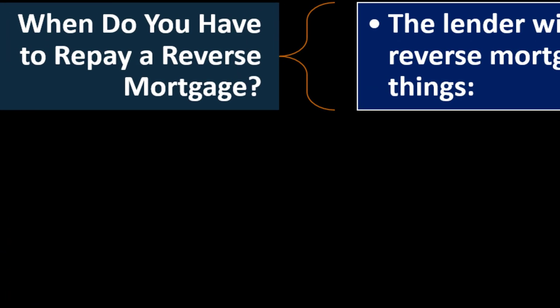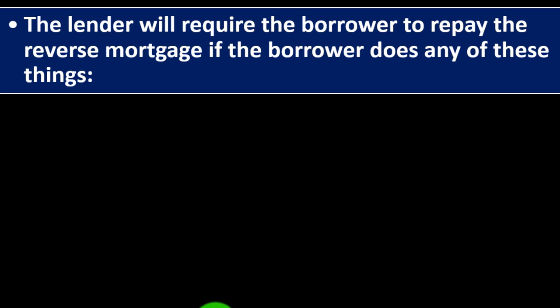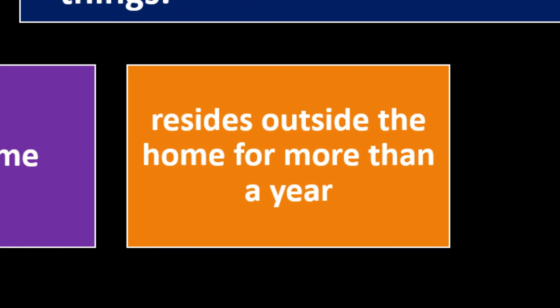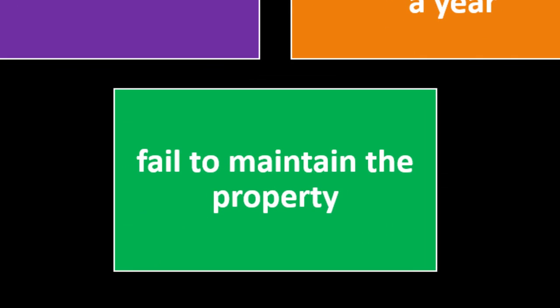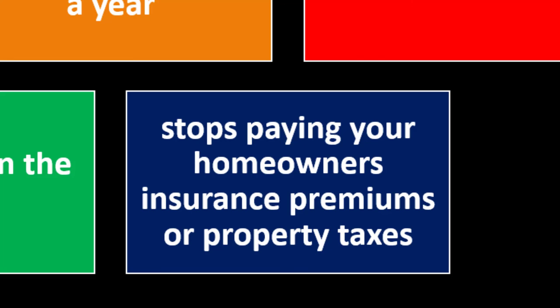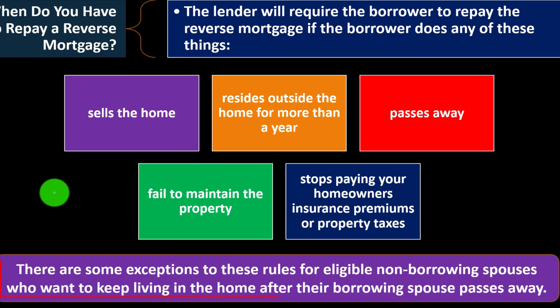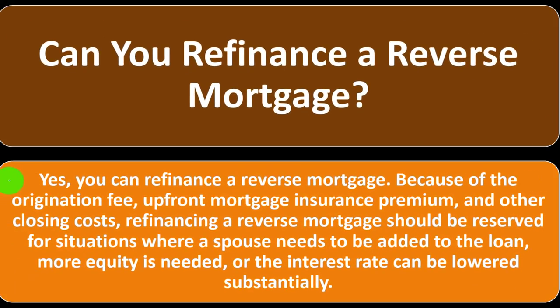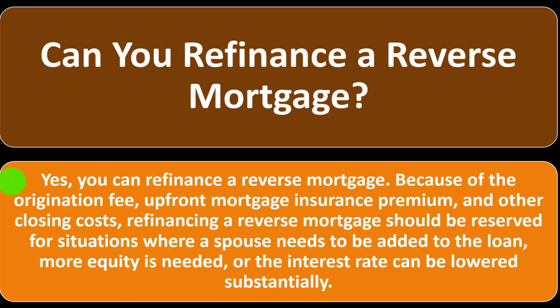When do you have to repay a reverse mortgage? The lender will require repayment if the borrower sells the home, resides outside the home for more than a year, passes away, fails to maintain the property, or stops paying homeowner's insurance premiums or property taxes. There are some exceptions for eligible non-borrowing spouses who want to keep living in the home after their borrowing spouse passes away. You can also refinance a reverse mortgage, though this should be reserved for situations where a spouse needs to be added to the loan, more equity is needed, or the interest rate can be lowered substantially.